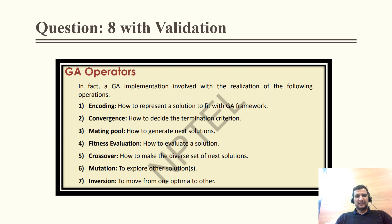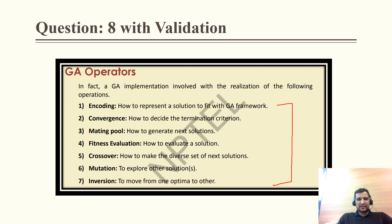For validation of Question 8, inversion, mutation, crossover, and fitness are all operators applied in genetic algorithm. The question states mutation is not applied, but mutation is applied to explore other solutions — so all these operations are applied.